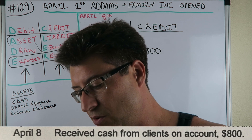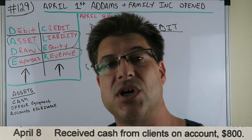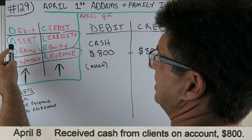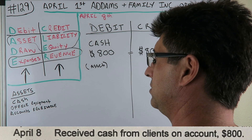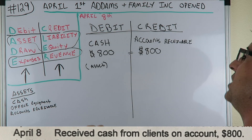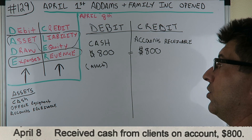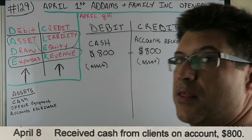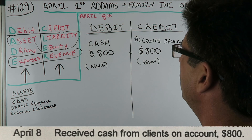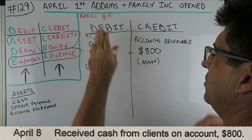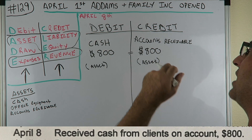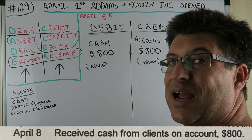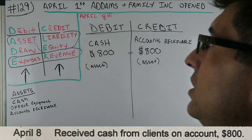So: received money on account means accounts receivable, and accounts receivable is an asset. If an asset is decreasing in value, we credit it. So accounts receivable is our credit — it's going down in value. That gives us $800 debit equals $800 credit. Cash is increasing (debit) and accounts receivable is decreasing (credit) because the client paid us back. That's our journal entry.